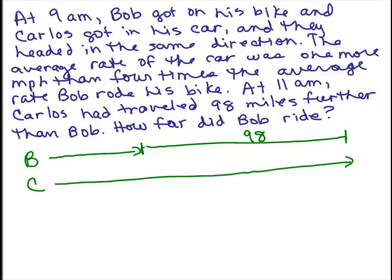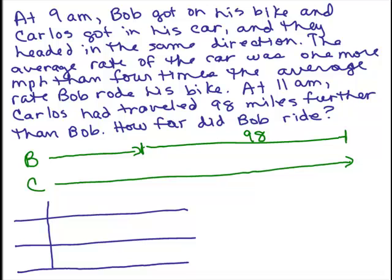So let's set up a chart to put in the information that we do know that we're given. We've got Bob and Carlos, or bike and car. Each has a rate and a time, and we're going to multiply those together to get the distance.